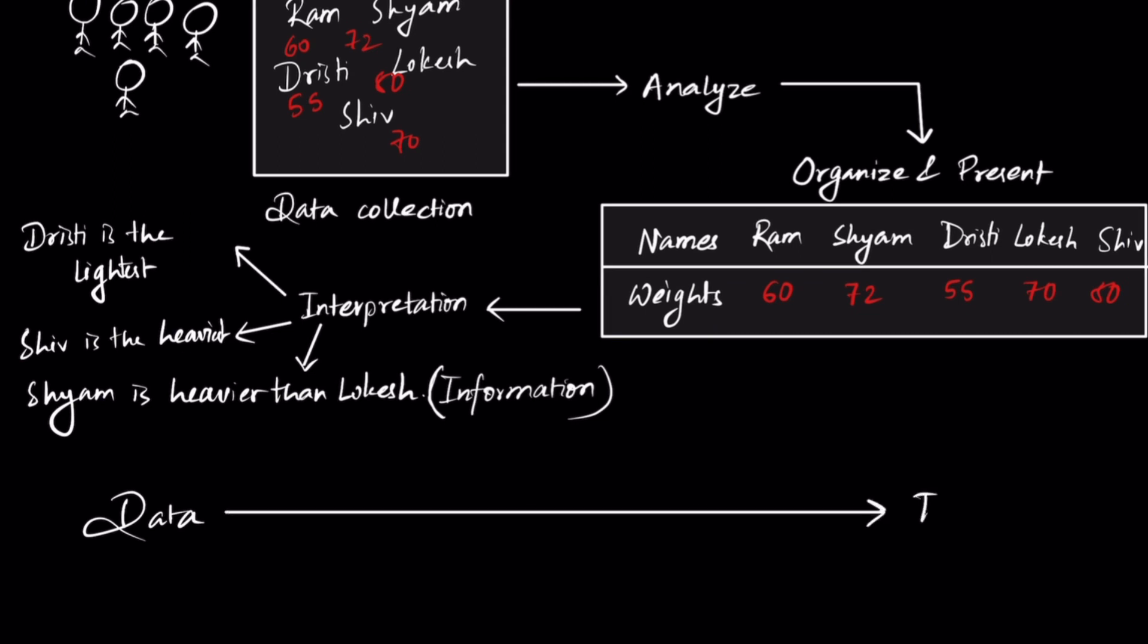However, the data had to travel through some steps, and these steps were: number one, you had to collect the data, so you collected the names and weights of the students. Then you had to analyze the data—you analyze the names and weights of those students.